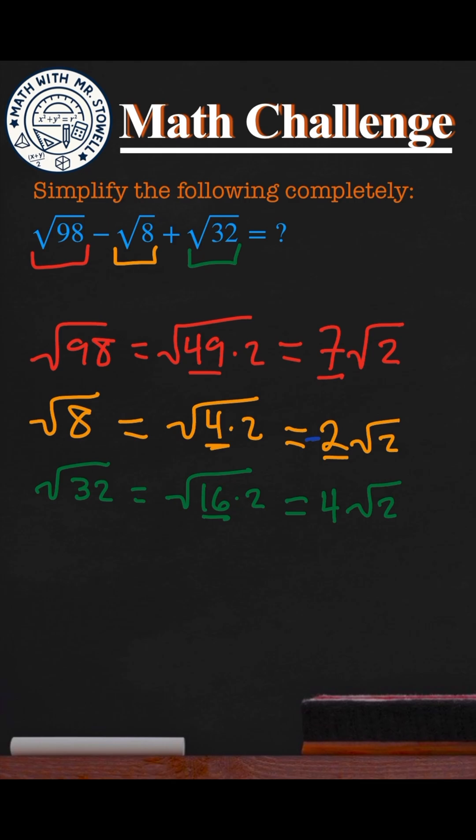So all we have to do is just do our addition and subtractions. Notice that all of these have square roots of 2. So this becomes a square root of 2 in the bottom, and all we have to do is figure out how many of these we have. Well, we have 7 of them. We're taking 2 away. That gives us 5. And then we're adding 4 more onto that. So this is going to be 9 square root of 2.